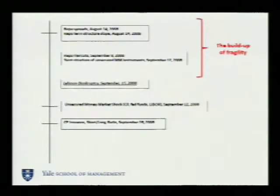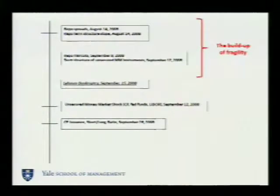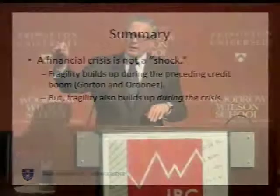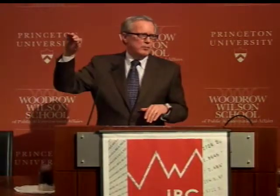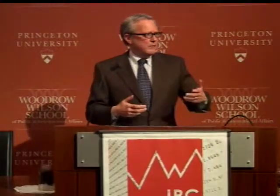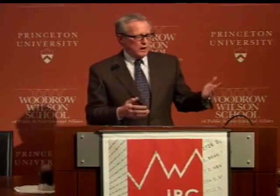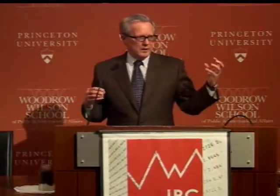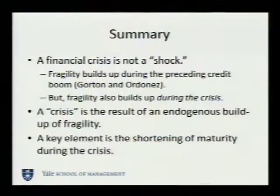A financial crisis is not a shock — it's a somewhat unhelpful expression. In other work with Guillermo Ordonez, we look at the preceding credit boom: holding the shock constant, the effect of a shock depends on how long the credit boom has been going on. Models like Kiyotaki-Moore or Bernanke-Gertler are big-shock theories — to get a big effect, you have to have a big shock, but why there was a big shock, we don't know. In this paper, it's not that Lehman was a big shock — it was in a particular context. There was this endogenous buildup of fragility going on — it's this process — and the end result of that is that we get Lehman.